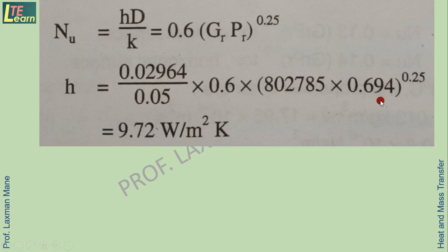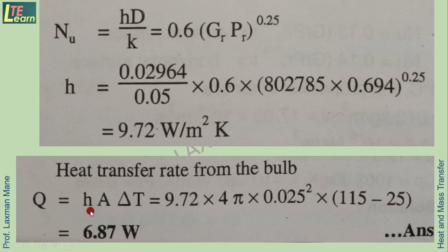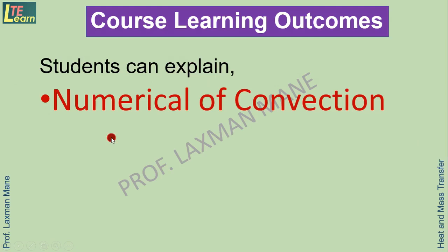Substituting the calculated Grashof number, the given Prandtl number, diameter, and thermal conductivity K, we find H. The heat transfer rate Q = H·A·ΔT, where area for a sphere is A = 4πr². Using the calculated radius and temperature difference, we find Q in Watts. In this way, we can solve numericals on convection heat transfer.